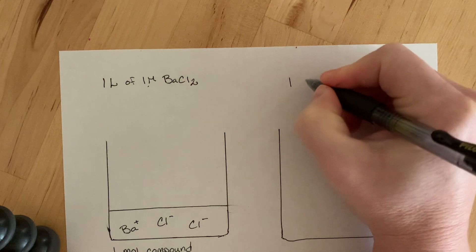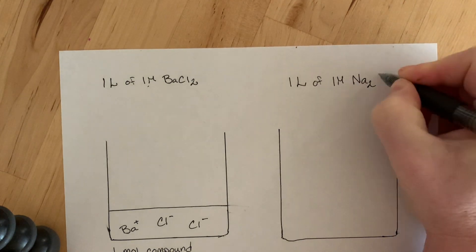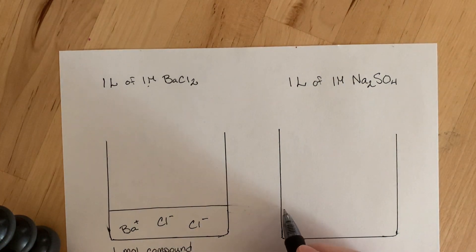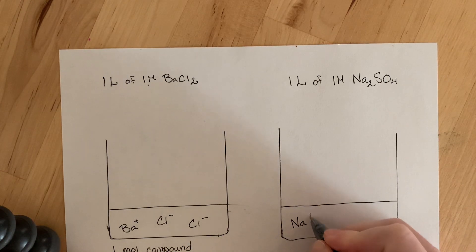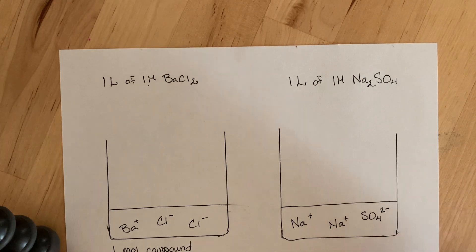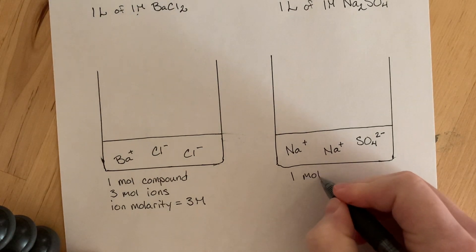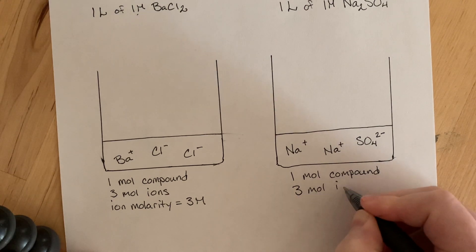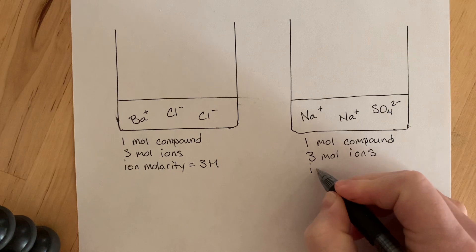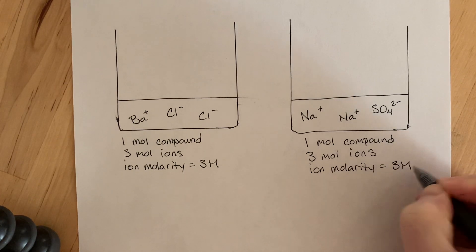And in this one, we have one liter of one molar sodium sulfate, which is also a strong electrolyte. It will entirely dissociate into its ions. So again, we have the same situation here. We have one mole of compound, but three moles of ions. So my ion molarity equals three molar.